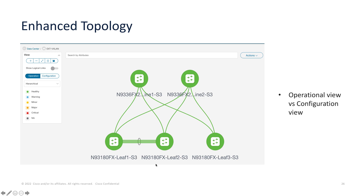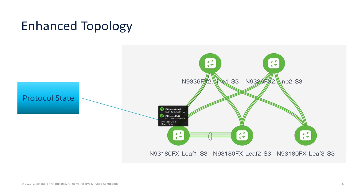When we look at the topology itself, we now have an Operation tab which shows the operational status in terms of the health of the switches, and a Config tab which shows whether the devices are in sync or out of sync. We have an enhanced topology view that now includes the protocol state. Operations like deploying are easy — right-clicking on any switch gives a whole bunch of options to execute at both the switch level and fabric level.